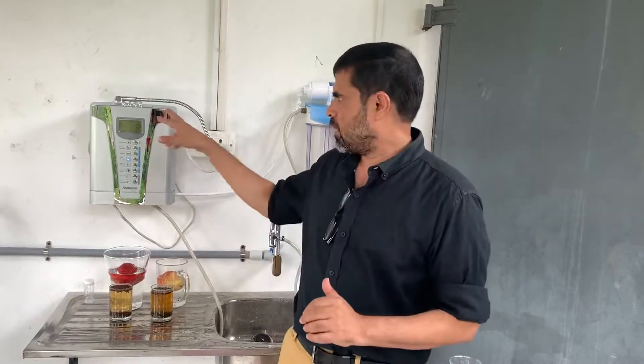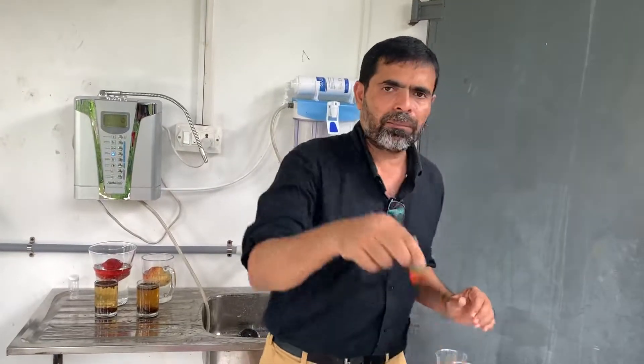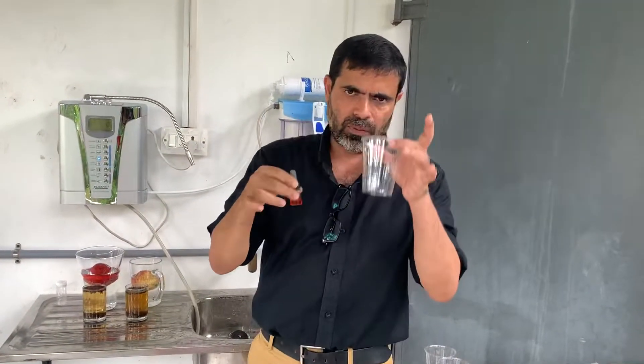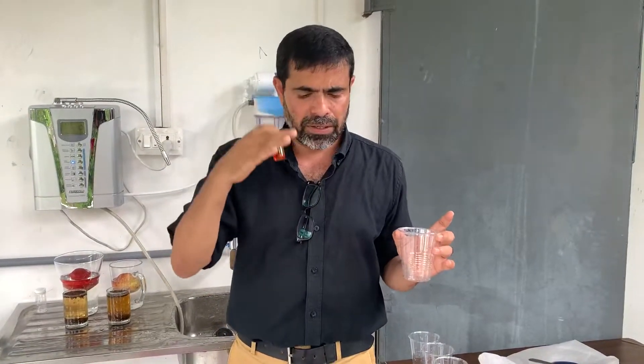This is a pH testing liquid. When we drop two drops of the testing liquid into the water, it will show the pH measure. The highest pH shows as violet, then indigo, then blue, then green, then yellow, then orange, and red. So the highest is violet and the lowest is red.